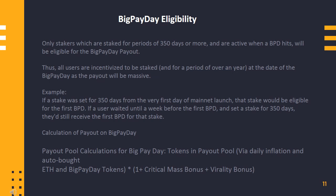Big Payday eligibility: Only stakers who are staked for periods of 350 days or more and are active when a Big Payday hits will be eligible for the Big Payday payout. All users are therefore incentivized to be staked for a period of over a year. For example, if a stake was set for 350 days from the very first day of mainnet launch, that stake would be eligible for the first Big Payday. If a user waited until a week before the first Big Payday and set a stake for 350 days, they'd still receive the first Big Payday for that stake.